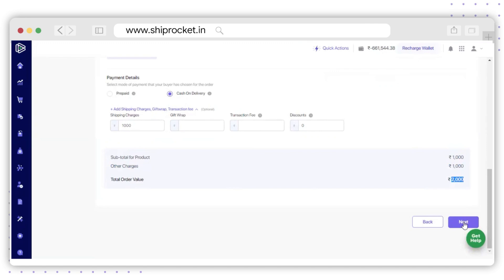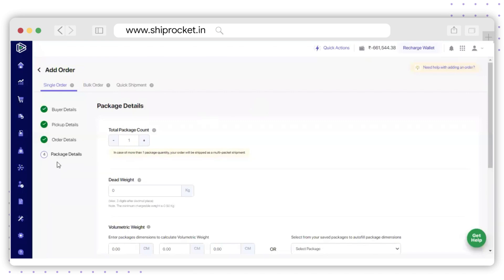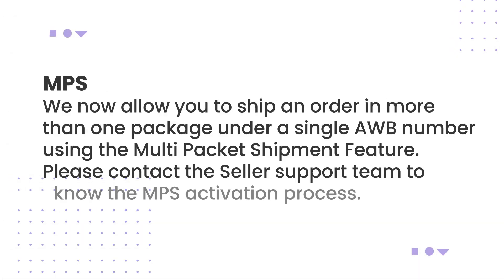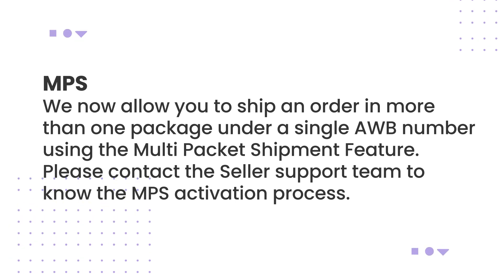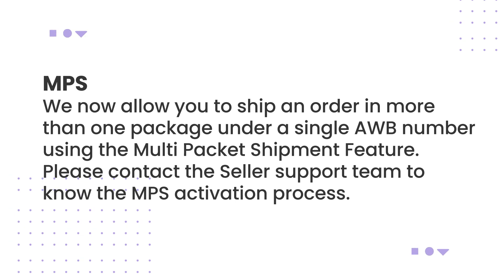Click on Next to move on to the last section: Package Details. Here you need to fill up your package details such as the total package count. Please remember that in case of more than one package, your order will be shipped as a Multi-Package Shipment (MPS). Ship Rocket allows you to ship an order in more than one package under a single AWB number using the MPS feature. Please contact the seller support team to know the MPS activation process.